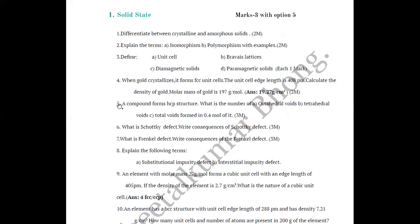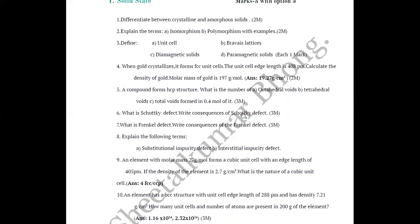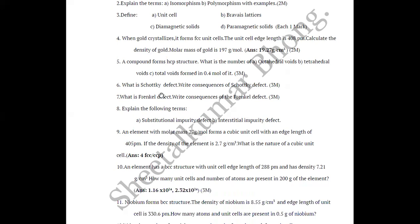Question 5: A compound forms HCP structure. What is the number of (A) octahedral voids, (B) tetrahedral voids, and (C) total voids formed in 0.4 moles of it — 3 marks. Question 6: What is Schottky defect? Write the consequences of Schottky defect — 2+1 = 3 marks.